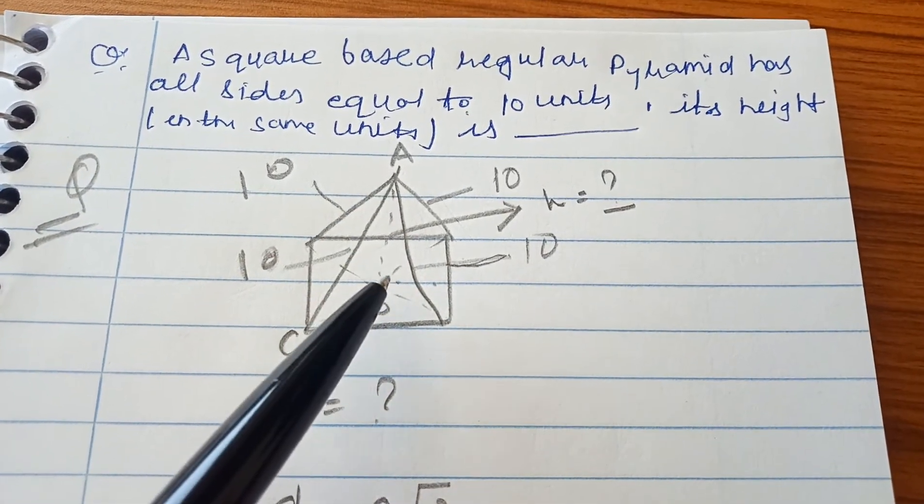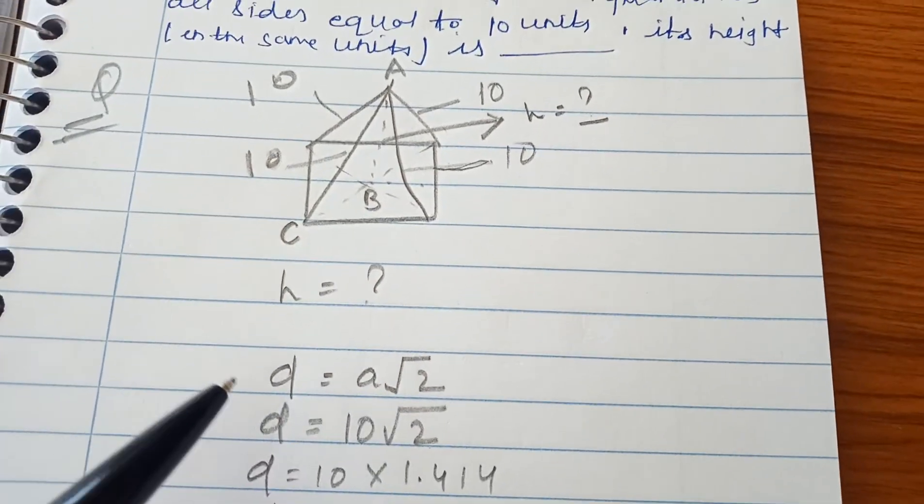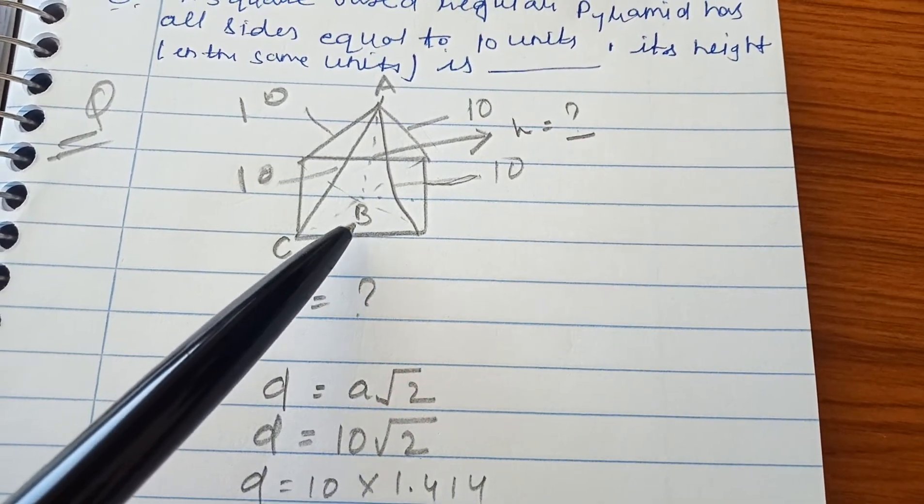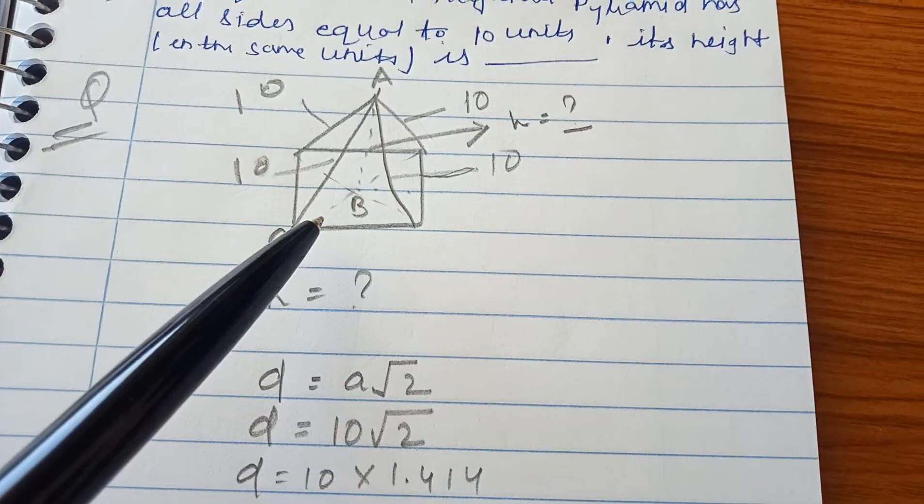We have to find out the height of the pyramid. So first, we will find out the diagonal of this rectangle. The diagonal will be d is equal to a√2.